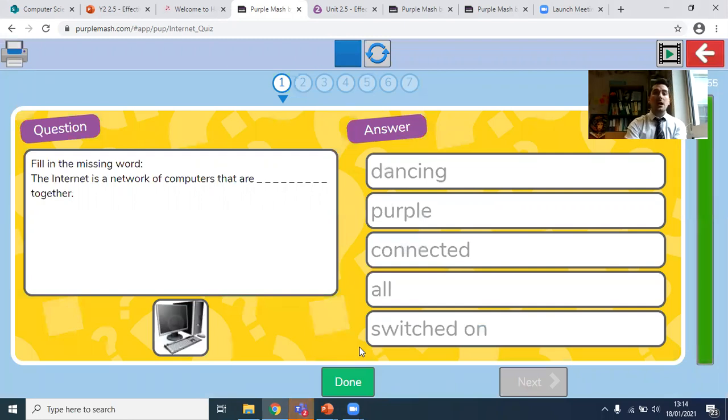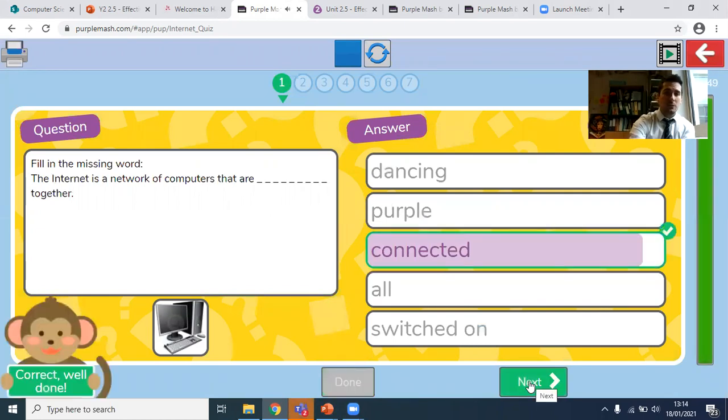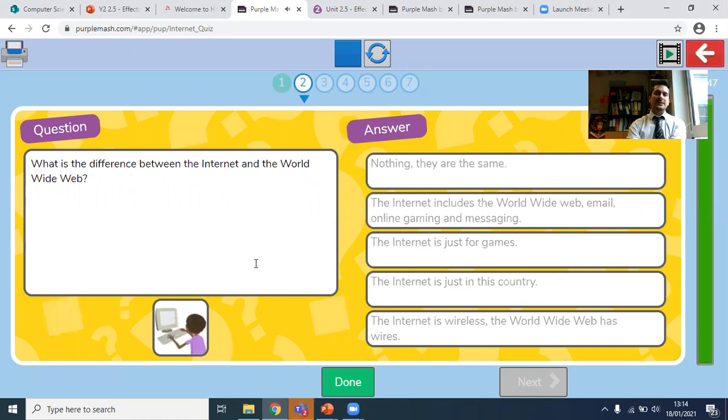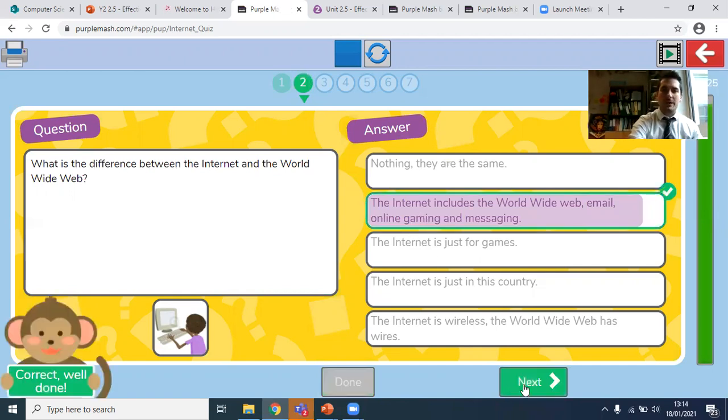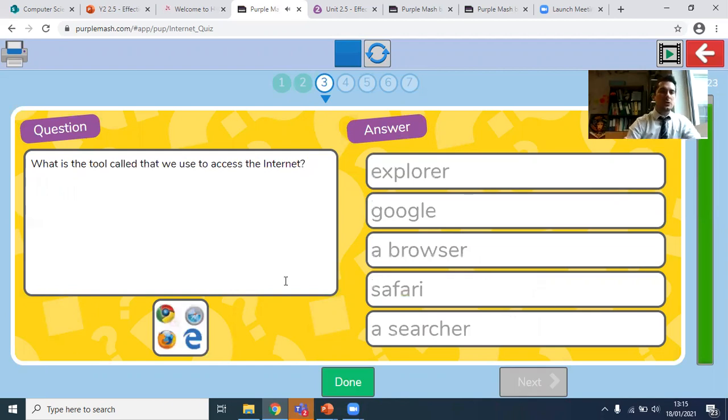So the first question said, the internet is a network of views that are, and the answer was last time we did together was connected together. Hopefully you got that one correct. The next one, what is the difference between the internet and the World Wide Web? It's not that they're the same, because of course the internet includes some extra things. And that's that second one, online gaming and messaging. The World Wide Web is just one part of the internet, which is a much larger part altogether.